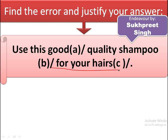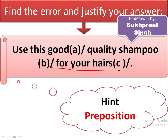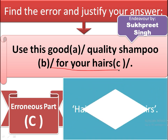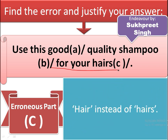Next sentence: 'Use this good quality shampoo for your hairs.' The erroneous part is C. You should note that we are to use 'hair' instead of 'hairs,' as 'hair' is used in singular only. We can't say 'hairs' — it's 'hair.'